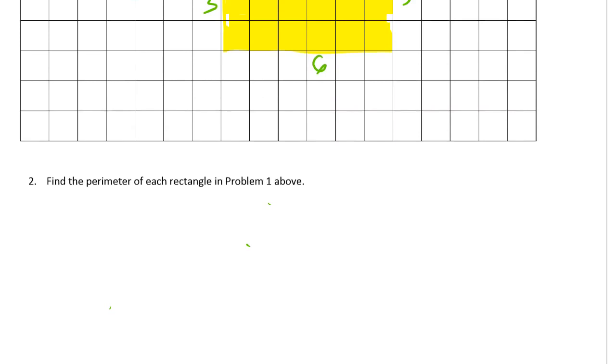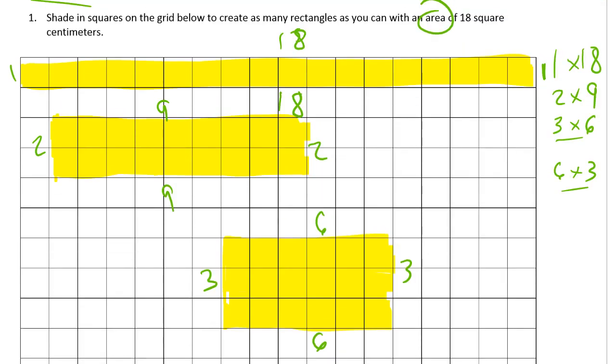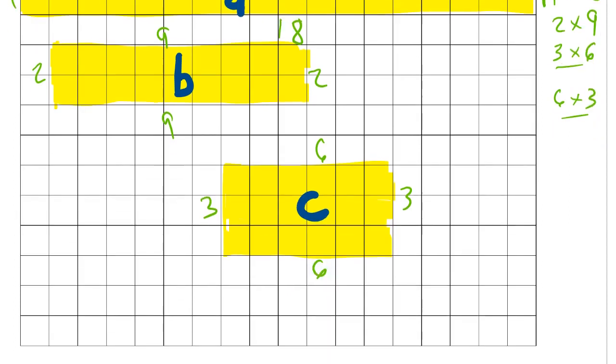So we'll start down here so we have plenty of room. 1, 2, 3, 4, 5, 6, 3 rows of 6. Fill it in. And label 3, 6, 3, 6. And now find the perimeter of each rectangle in problem 1 above. I'm gonna call this rectangle A and this rectangle B and this rectangle C, so that way I can refer to them down here.